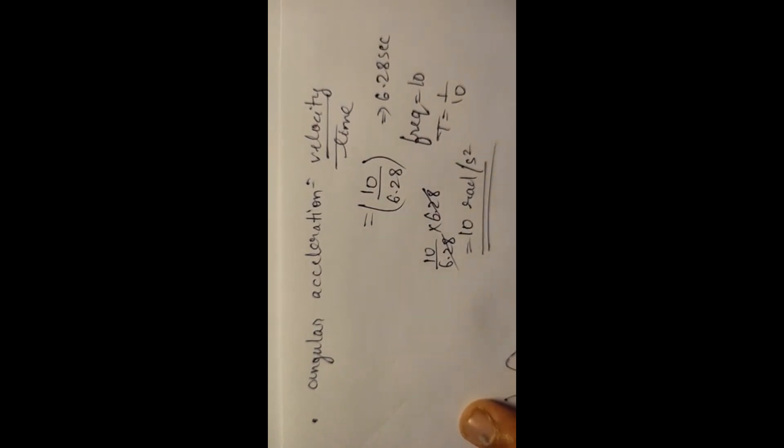So, the velocity. So, angular acceleration. This score 10 by 6.28 into 6.28, so this cancel, so answer is 10 radian per second square, right?